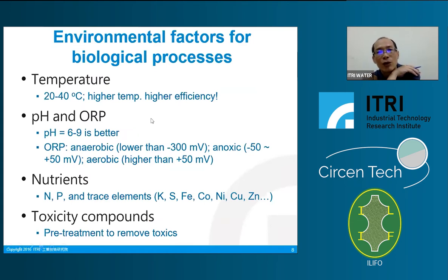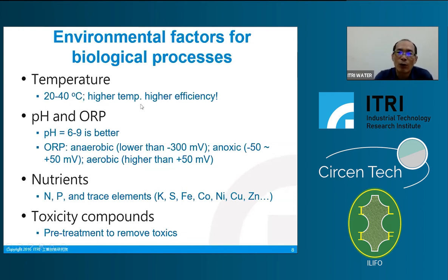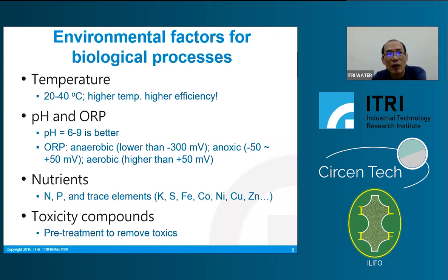Key environmental factors for biological treatment include temperature, ideally 20–40°C, where higher temperatures yield higher efficiency. Below 15°C, efficiency decreases significantly. In places like India where winter temperatures may drop below 10°C or even 5°C, heating may be required to maintain adequate treatment performance.